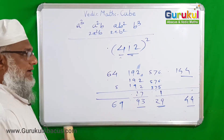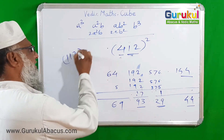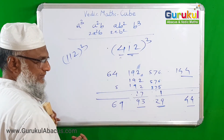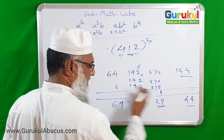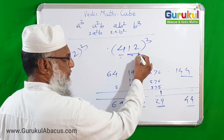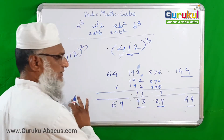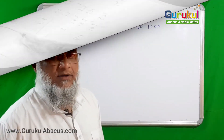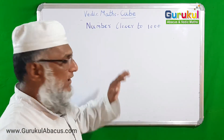To summarize: in the previous example of cube of 112, the second group had only 1 digit so we kept only 1 digit and carried the rest. But here, since the second group B is a 2-digit group, we keep 2 digits at each step and carry only the extra. This is the one key thing to understand.